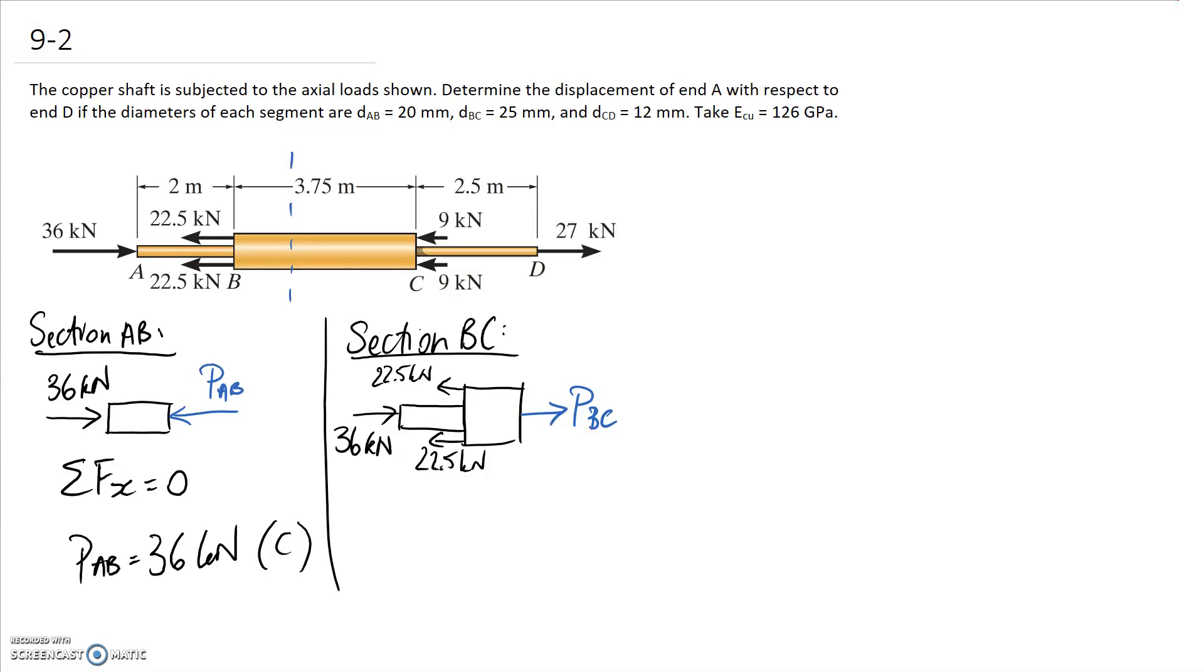And remember if you get it wrong it just comes out negative in the answer and you know to flip over the arrow. So we need to sum the forces to be equal to zero. So we're going to have 36 pointing to the right. We've got two pointing backwards of 22.5. And we've got PBC going forwards. So solving for the internal force through the section BC we end up with an answer of 9 kN and it comes out positive. So that tells me I did draw the direction correctly.